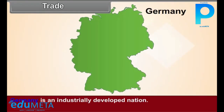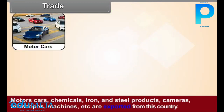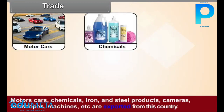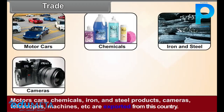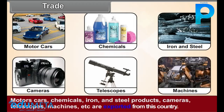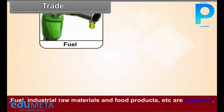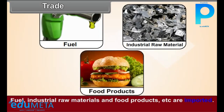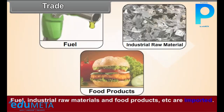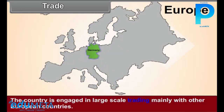Trade. Germany is an industrially developed nation. Motor cars, chemicals, iron and steel products, cameras, telescopes, machines, etc. are exported from this country. Fuel, industrial raw materials, and food products, etc. are imported. The country is engaged in large-scale trading, mainly with the other European countries.